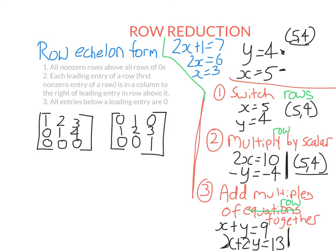We have two matrices here. The first one is in row echelon form because it satisfies all three conditions. This is the leading entry of the first row, this is the leading entry of the second row, and there's no leading entry in the third row. The leading entry in the second row is in a column to the right of the one in the first row, the row of zeros is on the bottom, and all entries below each leading entry are zero.